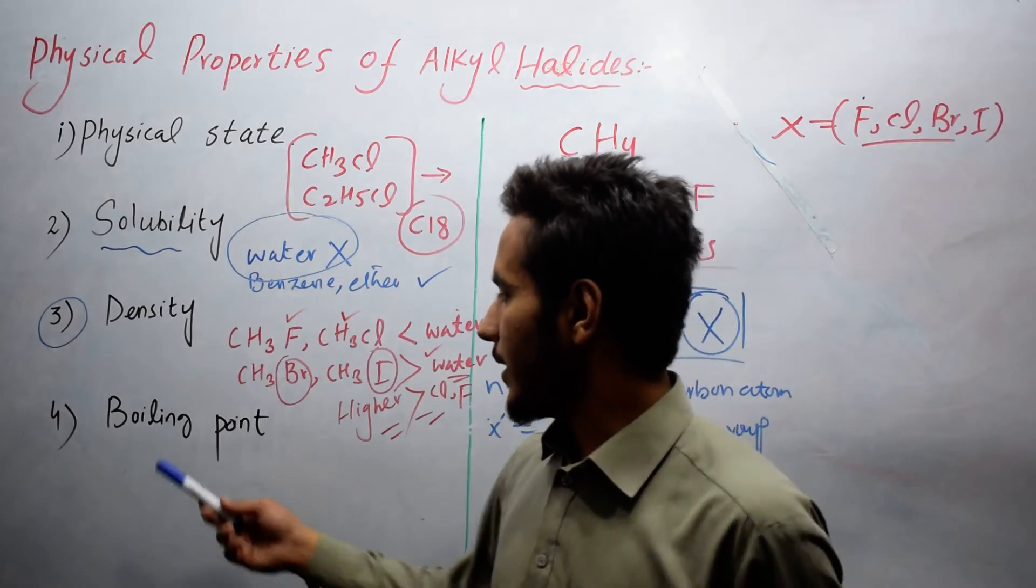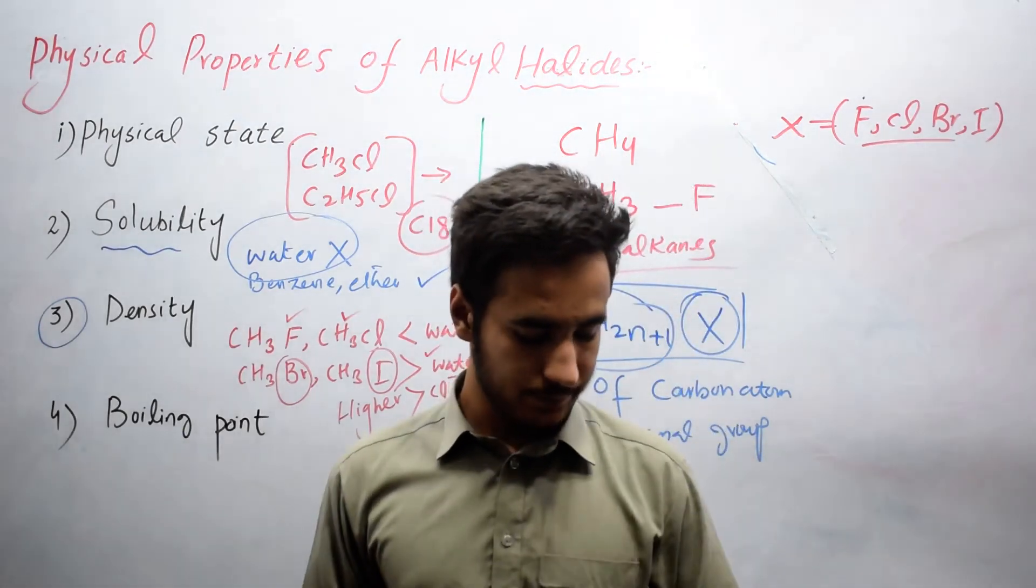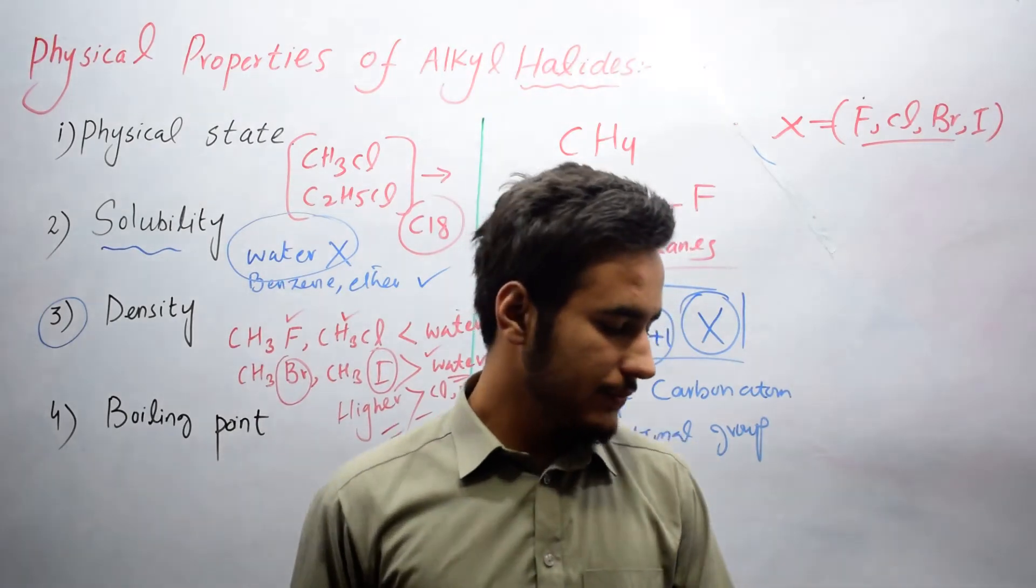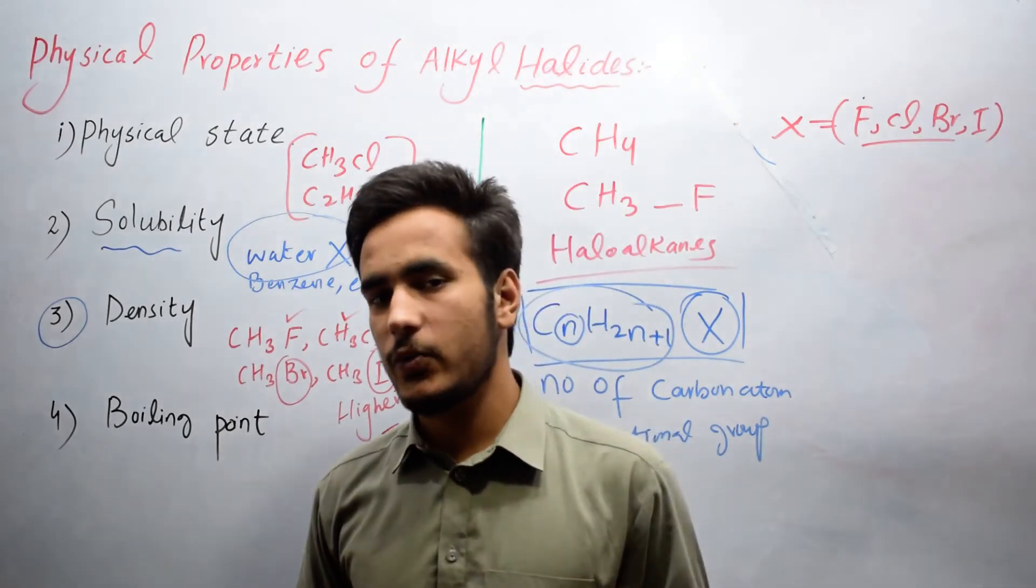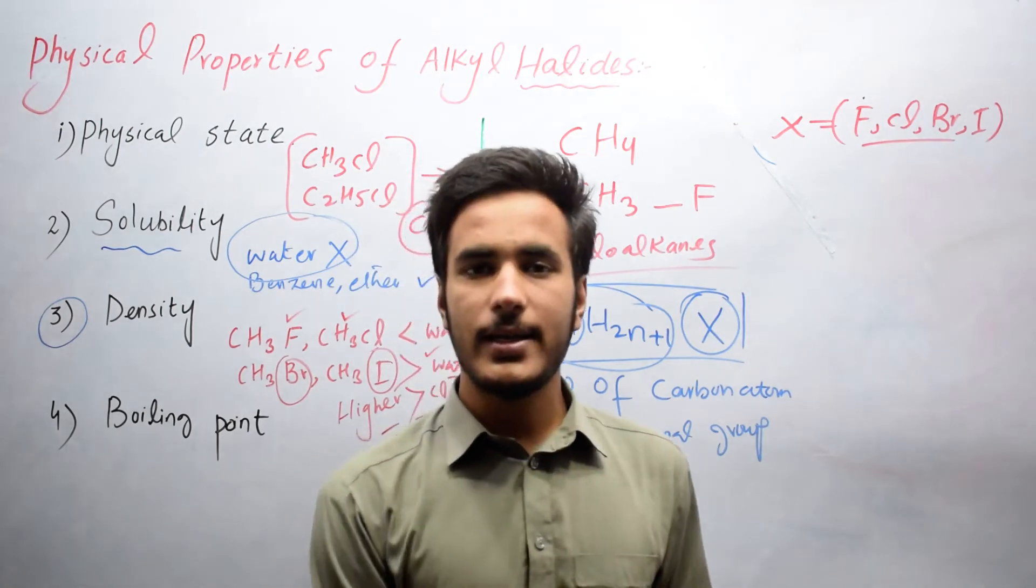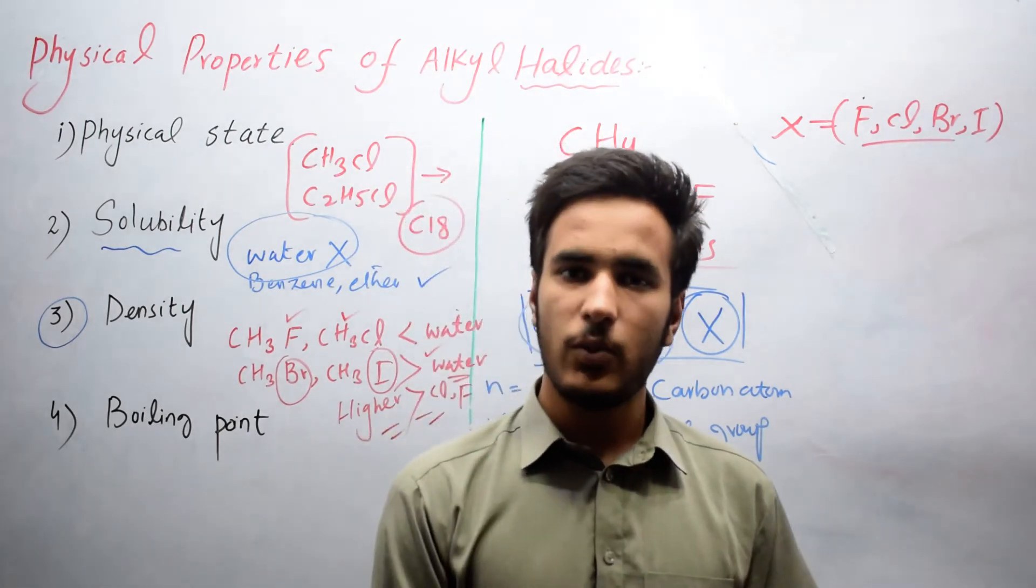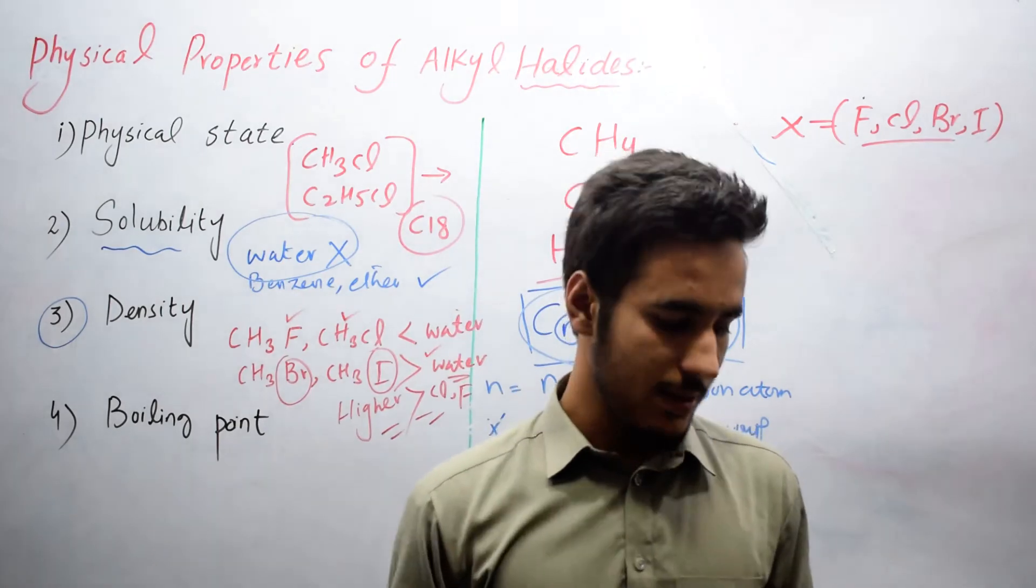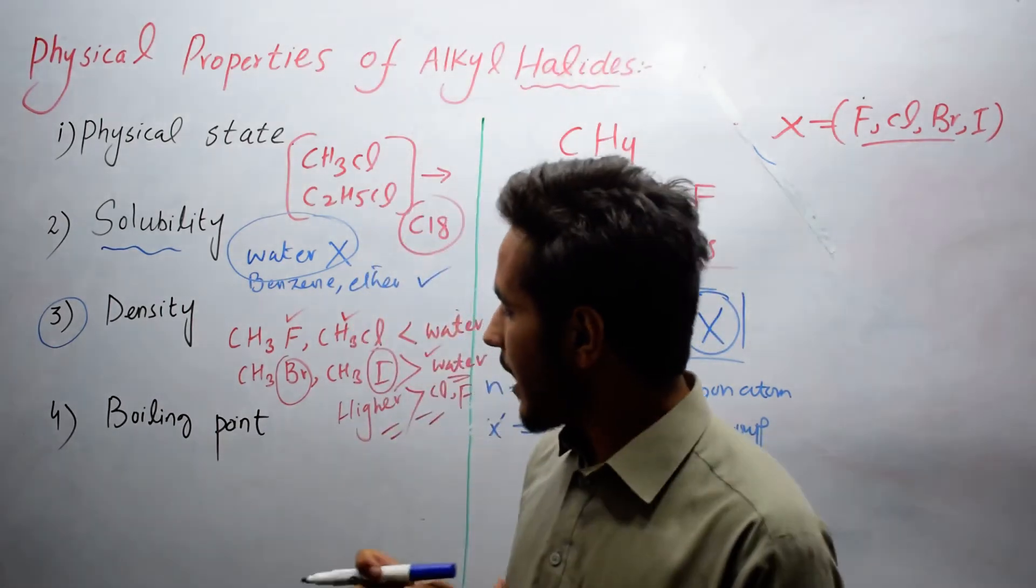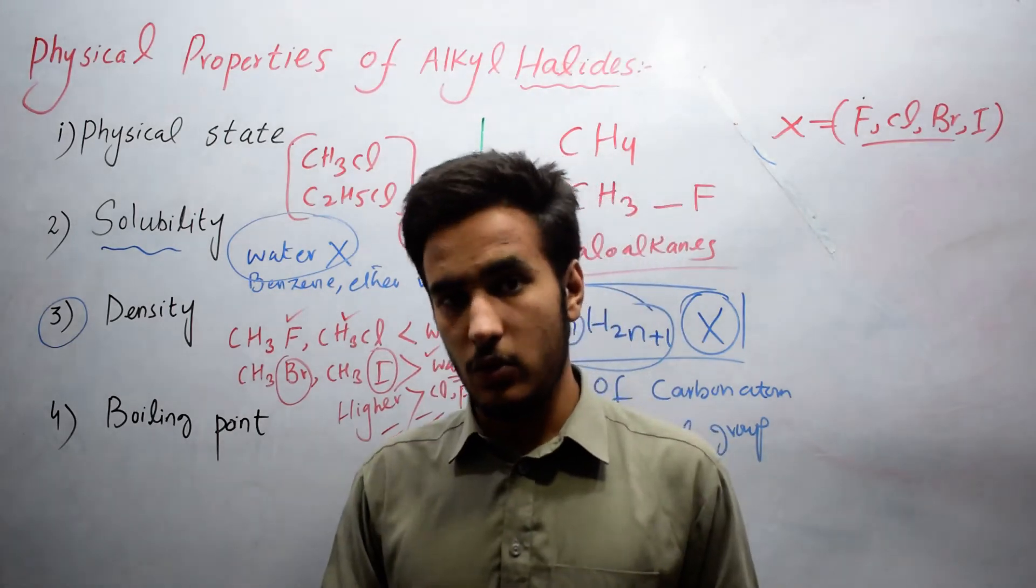The next property is boiling point. The boiling point of alkyl halide is increasing with increasing number of carbon atoms. If there is more number of carbon atoms, their boiling point will be high. If there is a small number of carbon atoms, their boiling point will be low.